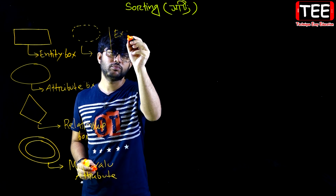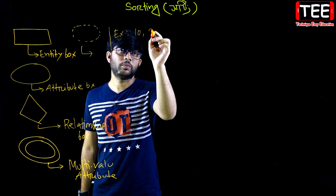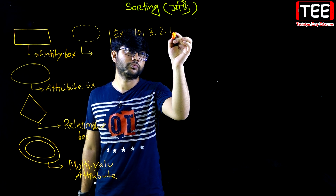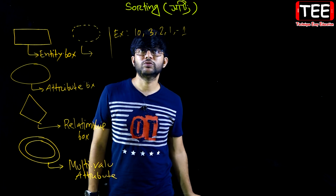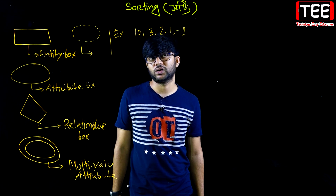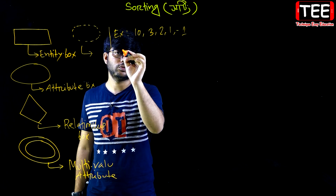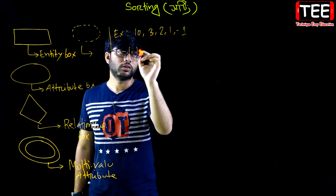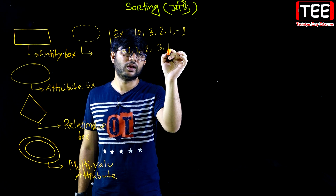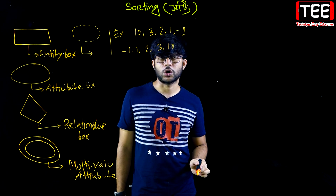So we can put some examples and use details of how many data are used in the example. This data says you must use ascending order. You use 1, then you use 2, then you use 3, then you use 10. This is what we need to do — that we have sorted.